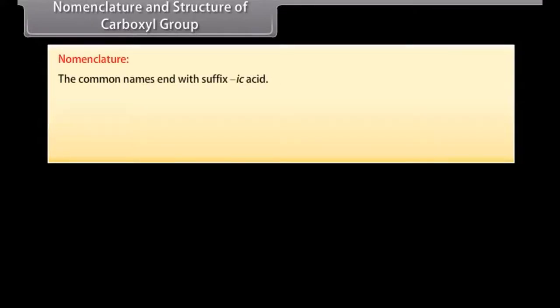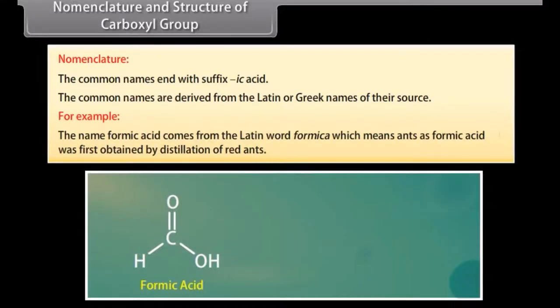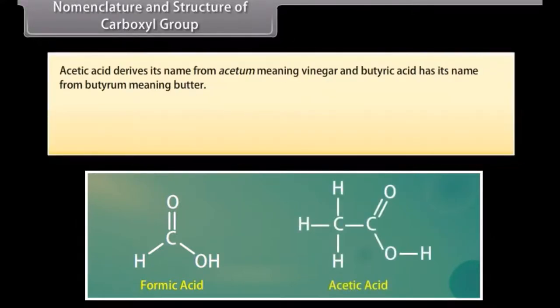Nomenclature and structure of carboxyl group: The common names end with the suffix 'ic acid'. The common names are derived from the Latin or Greek names of their source. For example, the name formic acid comes from the Latin word 'formica' meaning ants, as formic acid was first obtained by distillation of red ants. Acetic acid derives its name from 'acetum' meaning vinegar, and butyric acid has its name from 'butyrum' meaning butter.